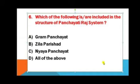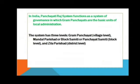Which of the following are included in the structure of the Panchayat Raj system? Options: Gram Panchayat, Zilla Parishad, Nyaya Panchayat, all of the above. The correct answer is all of the above. The Panchayat Raj system in India functions as a system of governance with three levels: Gram Panchayat at the village level, Mandal Parishad or Block Samiti at the block level, and Zilla Parishad at the district level.